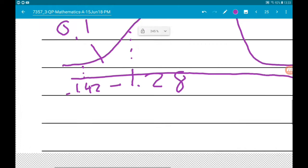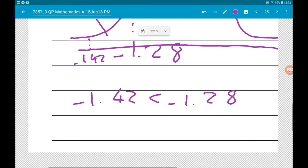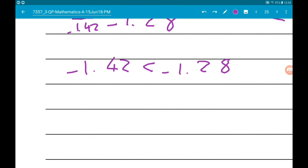Now our z-value is less than that, so minus 1.42 is less than minus 1.28. So because our z-value is less than the critical z-value, we reject H-naught and accept H1.